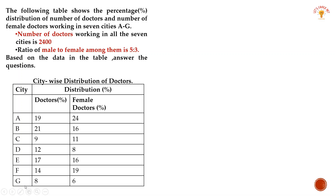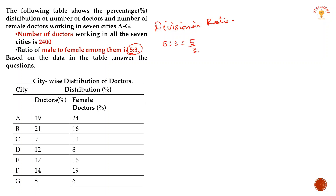The first question is the concept of ratio — specifically, Division in Ratio. What is the basic formula? The ratio here is 5 divided by 3, which is the core meaning of division in ratio.